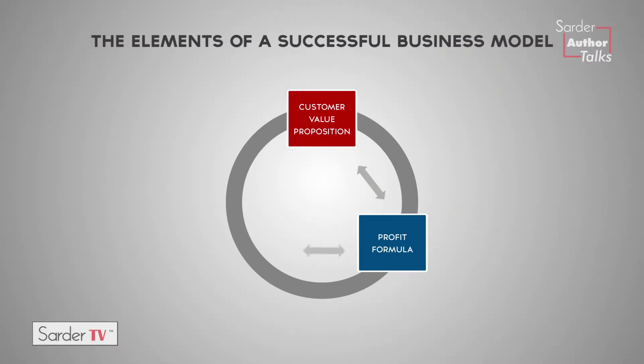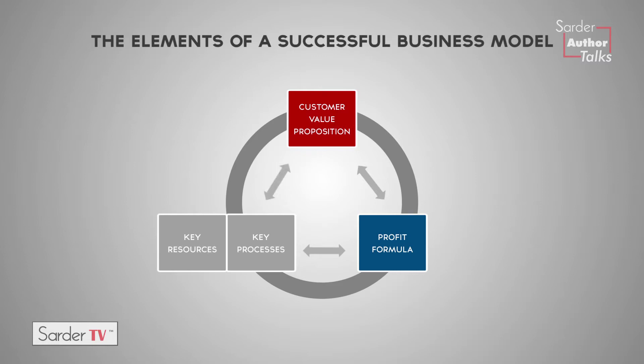The third piece is divided into resources and processes — these are the activities, the way the work gets done. The resources and processes enable repeated delivery of the value proposition to a customer, and how the company repeatedly captures that value through the income statement — how it makes money on a repeatable basis.